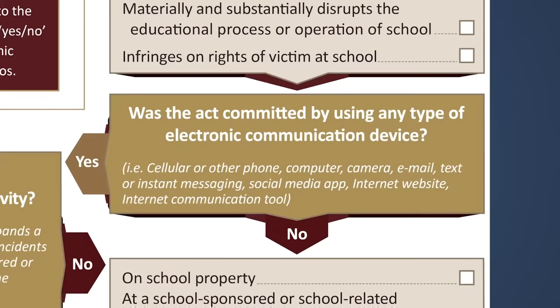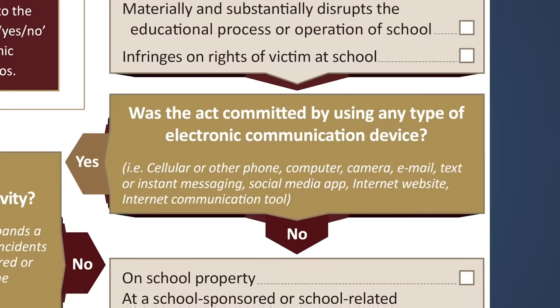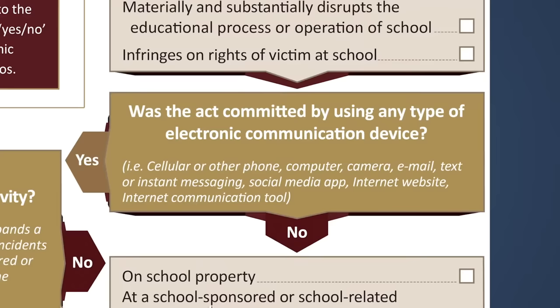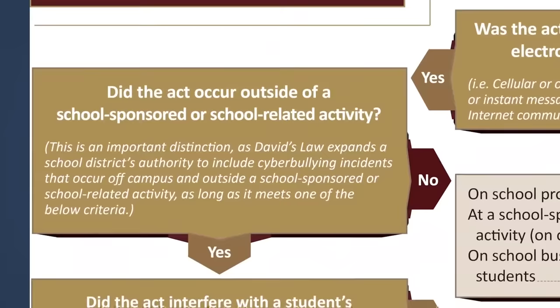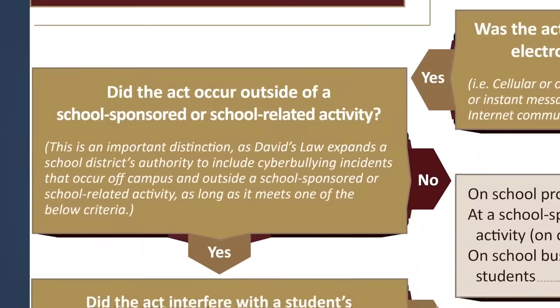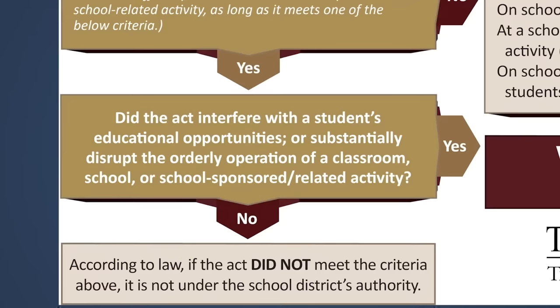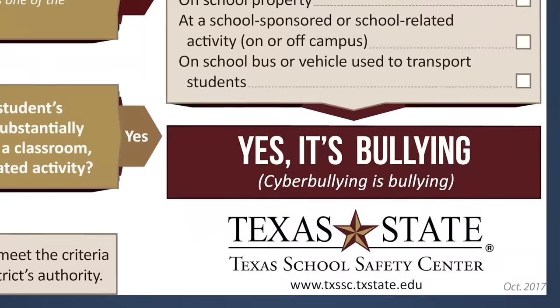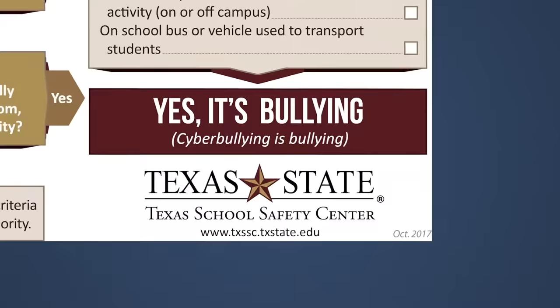Was the act committed using a phone, computer, email, text messaging, or other electronic communication device? If not, the action should be evaluated based on whether it occurred on school property, on school transportation, or at a school-related activity. If an electronic communication device was used on school property, the school continues to have authority to address it as bullying. If the action occurred off-campus, the school now has expanded authority to address it as cyberbullying if it infringes on the rights of the victim at school or substantially disrupts the educational process. If the school determines the action meets these criteria, the school has the ability to intercede and cooperate with local law enforcement to help ensure safety for all affected students.